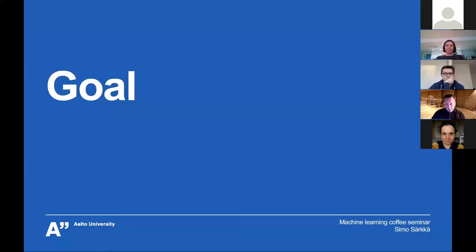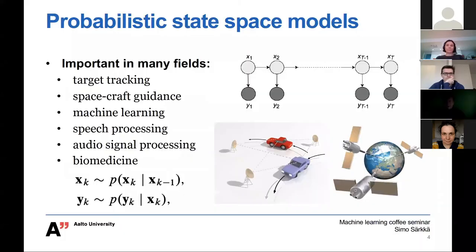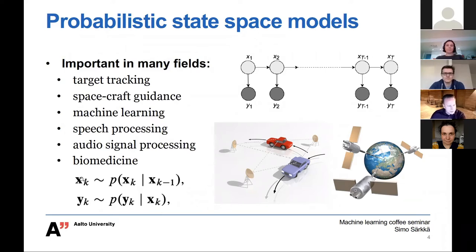What is the goal here? We have probabilistic state-space models, which are important in many fields. State-space models have some kind of state x_k, where k is the time step number. We have a dynamic model that tells how the state evolves in time, and then a measurement model — we don't actually measure the state directly, but some kind of proxy or measurement of it, modeled as the measurement vector given the state vector.